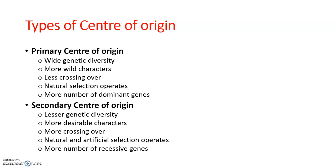Wild relatives in the primary center of origin are very important for improving crops and improving the genetic diversity of cultivated crops. Plants in the primary center usually have more dominant genes. Plants in the secondary center of origin, which is far from the primary center, are cultivated or domesticated and usually have lesser genetic diversity but more desirable characteristics, as they are selected based on those desirable traits. They also have more crossing over.